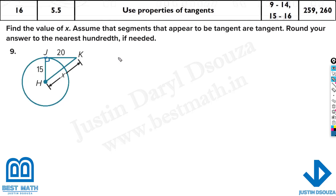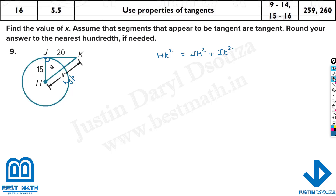Now, what can we use here? We can use the Pythagorean theorem. For the Pythagorean theorem, we write HK as the hypotenuse, and the other two sides are adjacent to the 90 degrees. So we write: HK squared equals JH squared plus JK squared. The square of the hypotenuse equals the sum of the squares of the other two sides.